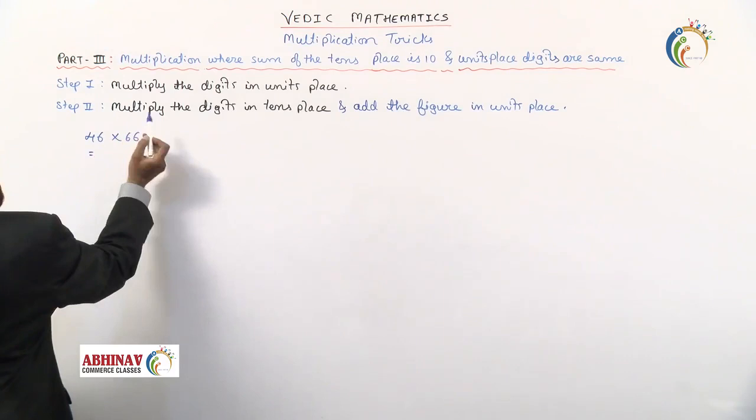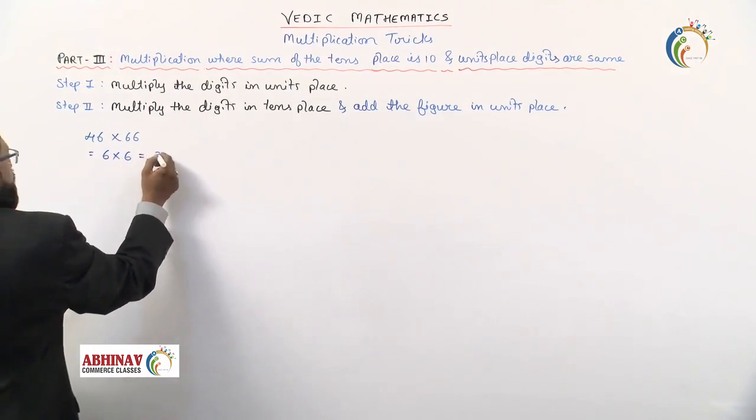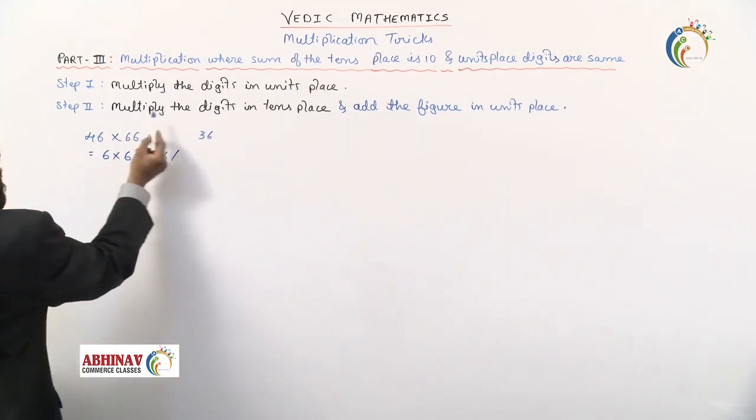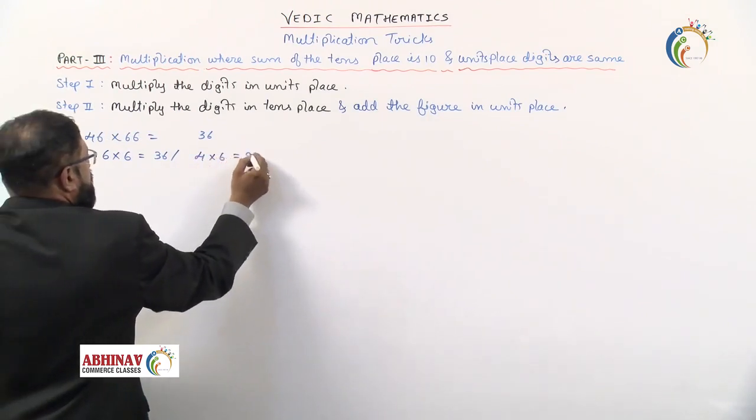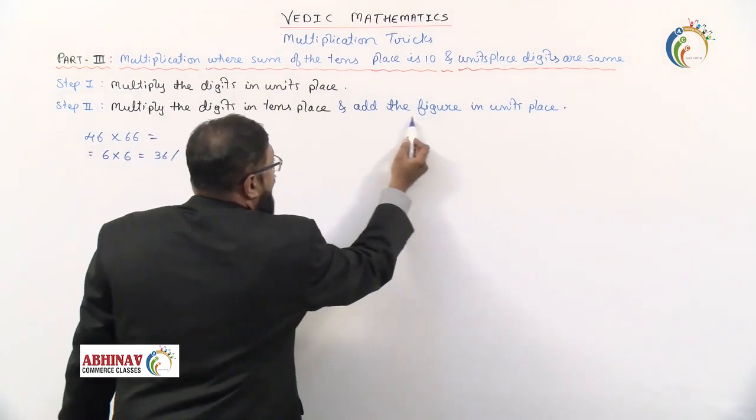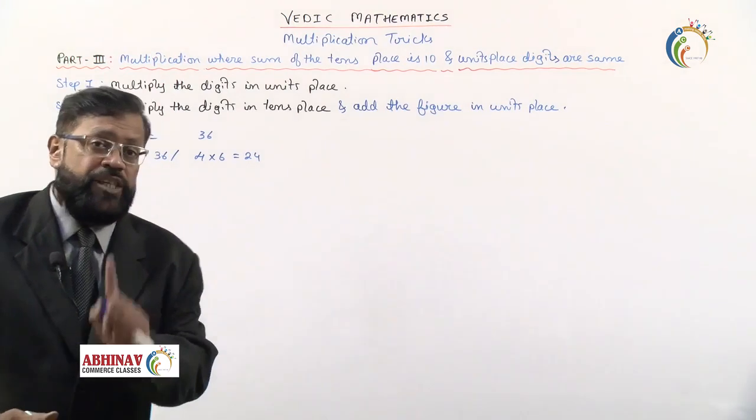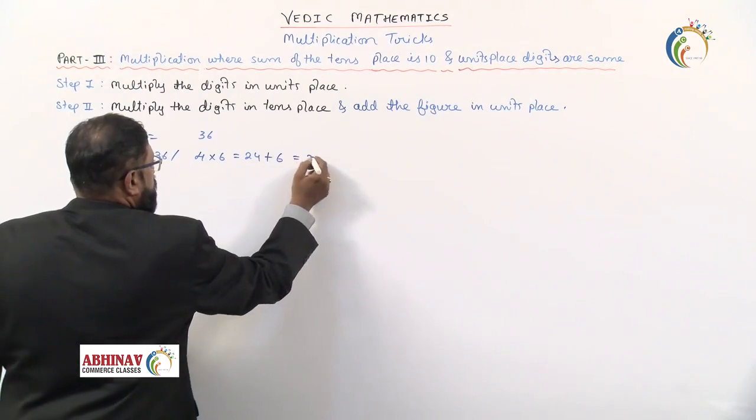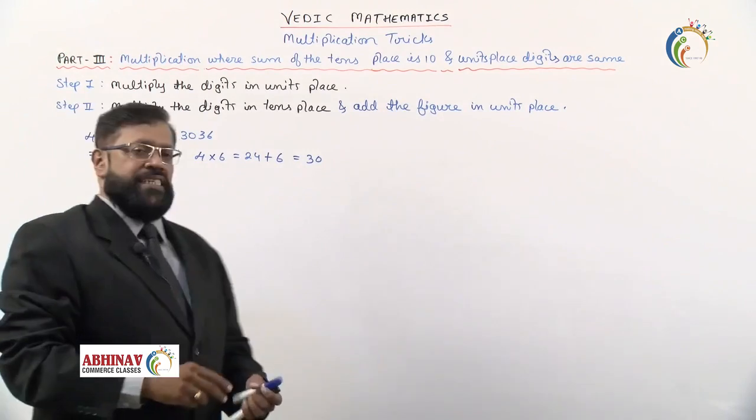Multiply the digits in units place. Units place, what are the digits? 6 into 6, what we get is 36. We will write it to the right hand side, 36. Then multiply the digits in tens place, that is 4 into 6, what we get is 24. And add the figure in units place. What is the figure in the units place? 6. So 24 plus 6, what we get is 30.